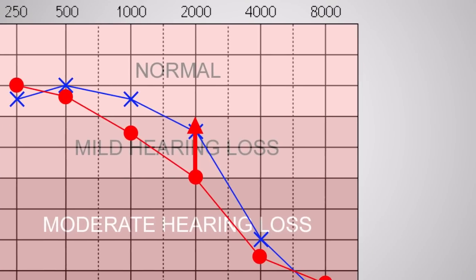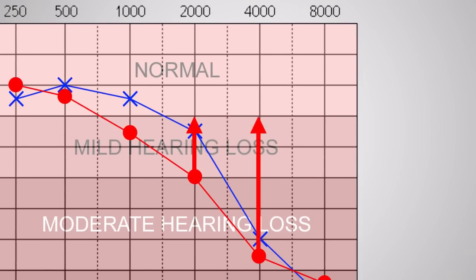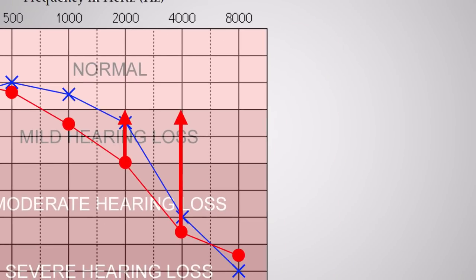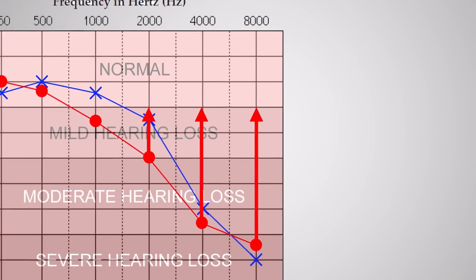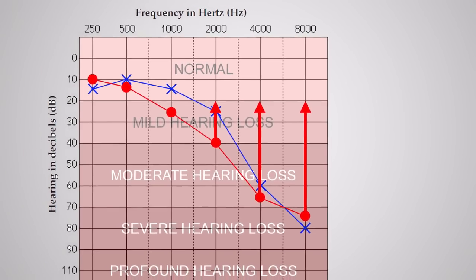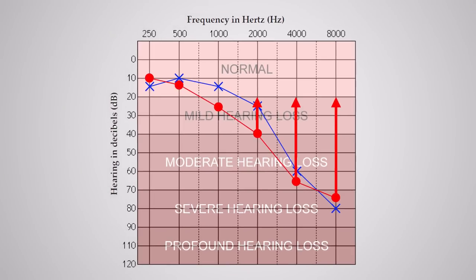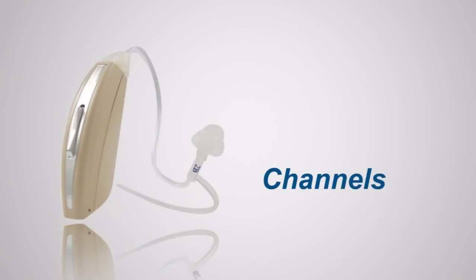At 4,000 Hz we would need to add 45 dB of gain to get that frequency to a normal range. At 8,000 Hz we would add 55 dB of gain to get that frequency to a normal range. This is how hearing aid bands increase specific frequencies where you need it in the areas that you have hearing loss. Now let's take a look at channels.